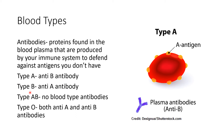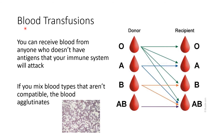The opposite is true if you have type B blood — you produce anti-A antibodies. Type AB blood doesn't produce any antibodies at all, because they already have both antigens on the surface of their blood cells. Type O blood produces both antibodies because it doesn't have any surface antigens at all.